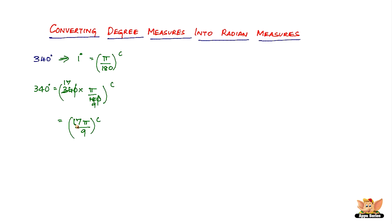Let's look into another degree measure to convert into a radian measure. We have 40 degrees and 20 minutes. To convert 40 degrees 20 minutes into a radian measure, all you have to do is take the minutes and change them into degrees first.